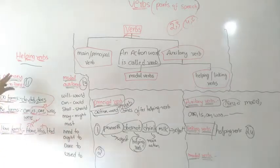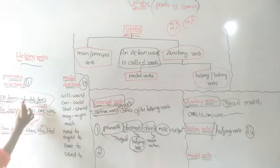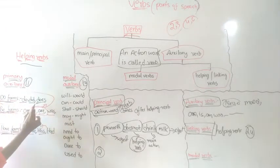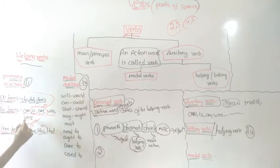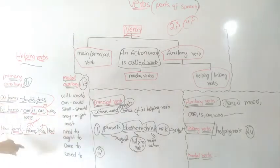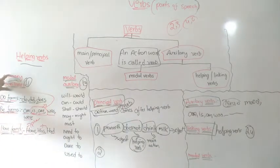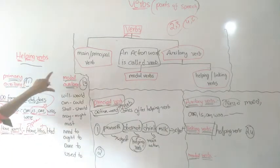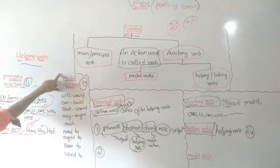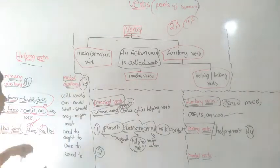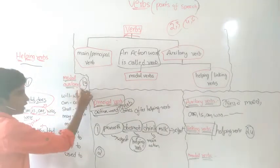These are the eleven primary auxiliaries in total: do, did, does, am, is, are, was, were, have, has, and had — eleven in primary auxiliaries. Next, we look at modal auxiliaries, of which there are thirteen.